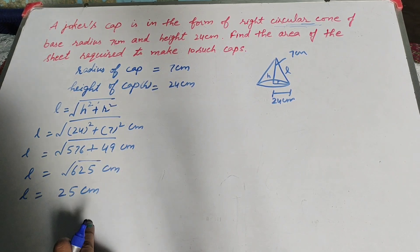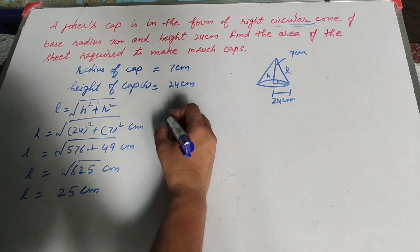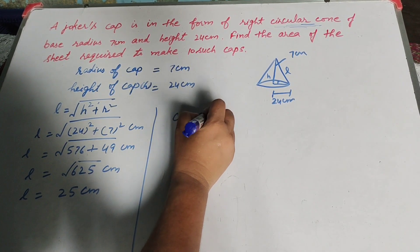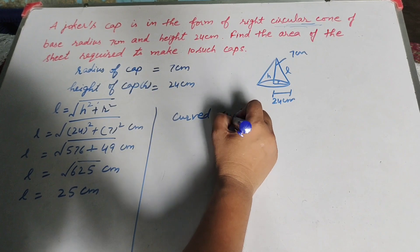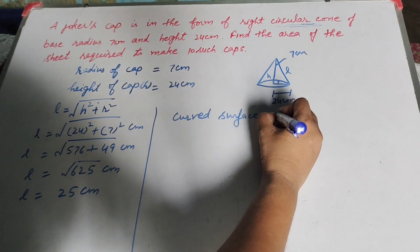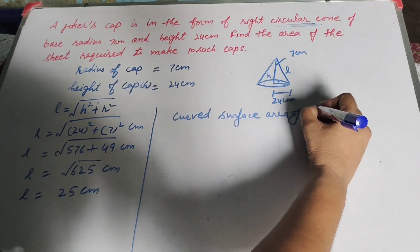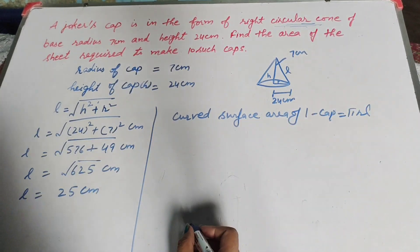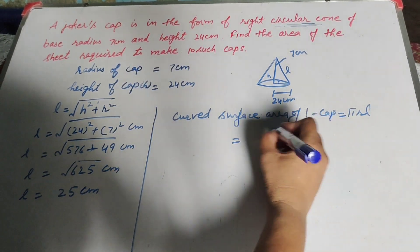It is equal to 25 cm, so L is equal to 25 cm. Now we find curved surface area of one cap. Curved surface area of one cap, we know the formula to find area of cap, it is pi r l.